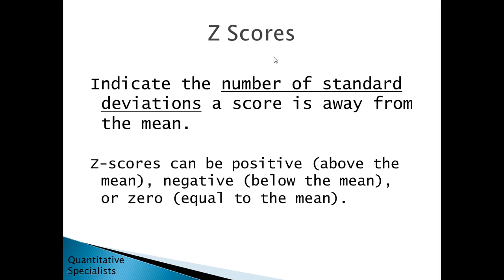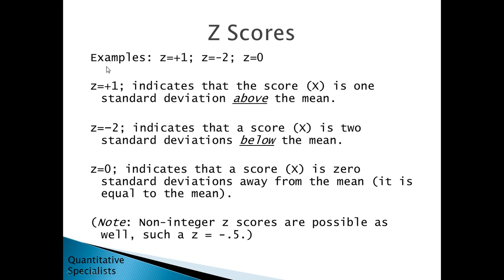Z-scores indicate the number of standard deviations a score is away from the mean. Z-scores can be positive, which is above the mean; negative, which is below the mean; or zero, which is equal to the mean. Here are a few examples: a z of positive 1, a z of negative 2, and a z of 0.